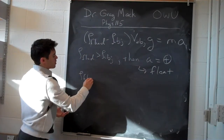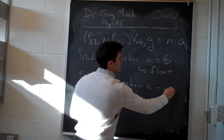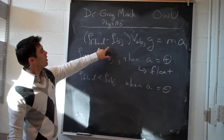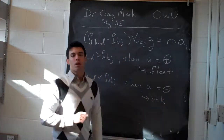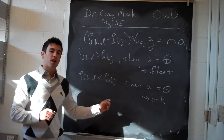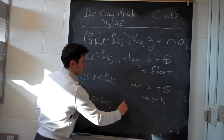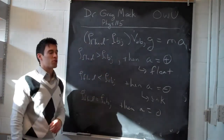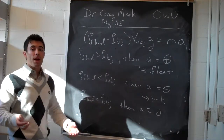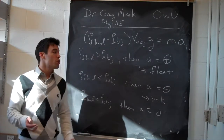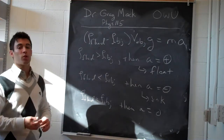If instead rho_fluid is less than rho_object, then the acceleration is negative — that smaller density difference makes a negative net force — so the object will sink. And if you make the object's density equal to the fluid's density, the acceleration is zero and the object stays where it is. Otherwise things will float, sink, or rearrange.